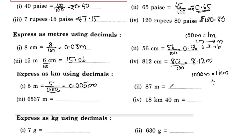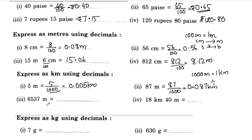This is 87 meters. This is 87 by 1000. This is equal to a decimal point with 3 digits. 87 is 2 digits, so this is equal to 0.087 kilometers. This is 6537 meters.